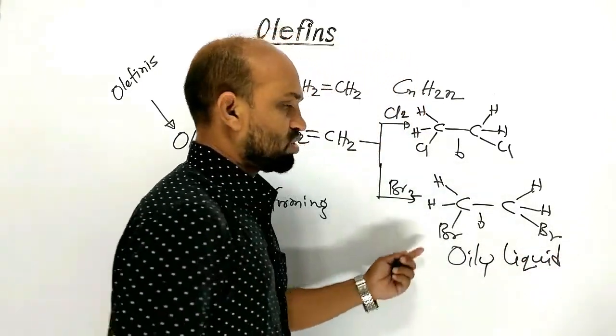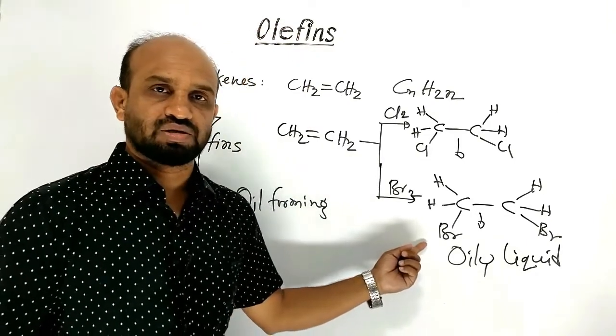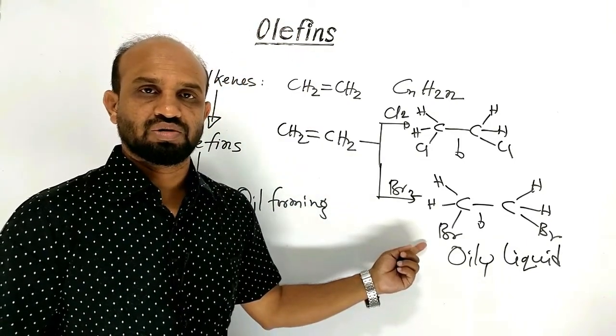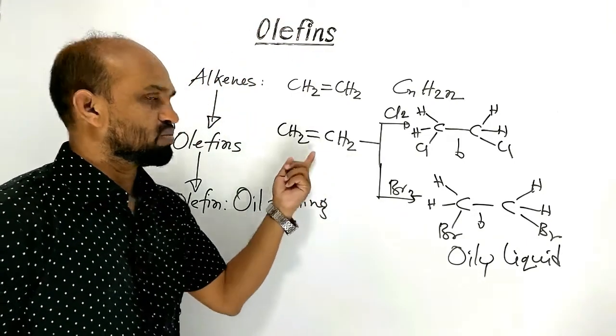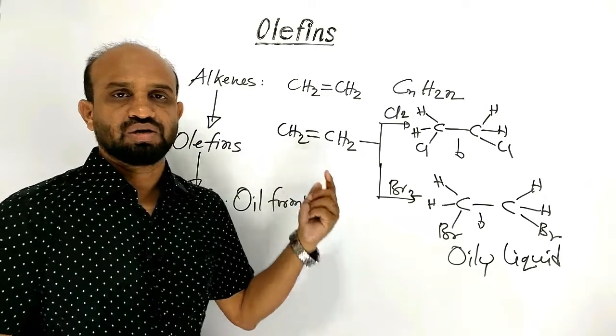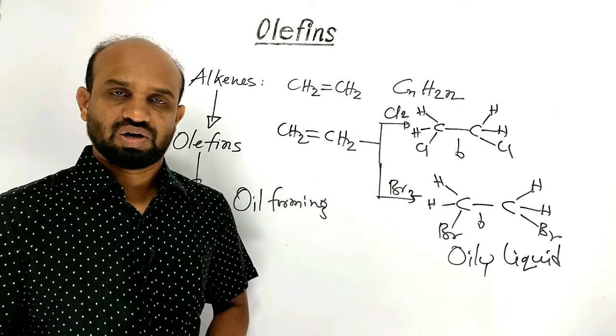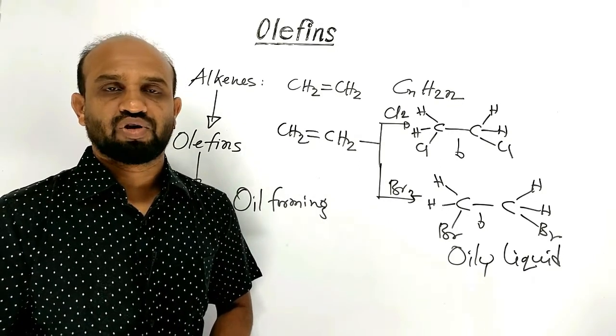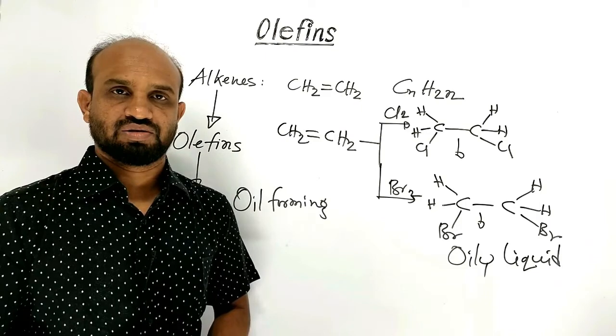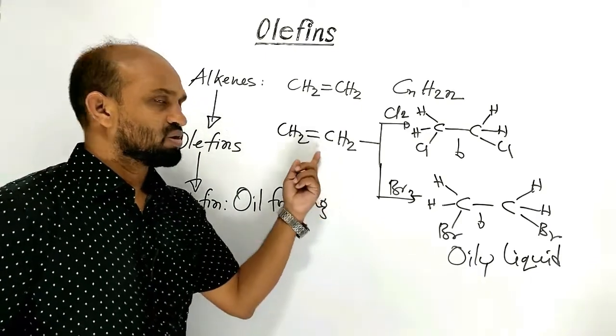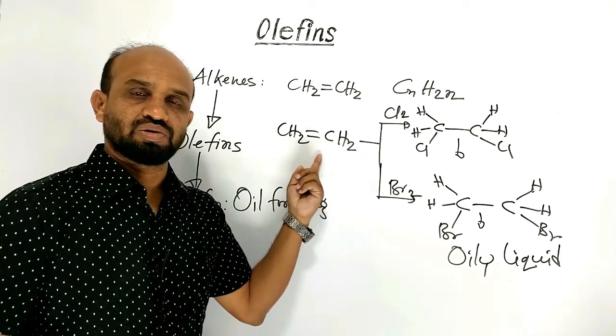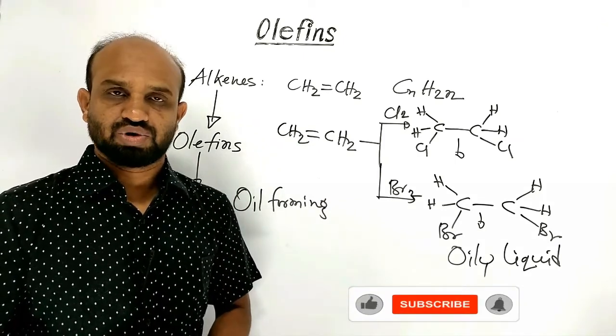Because of this oily appearance, oily compound produced from alkene, that is why alkenes generally called olefins, oil forming compounds. Because from this compound, oily compound is produced.